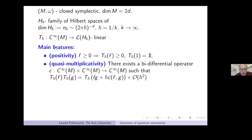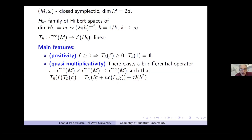We then have the rule of quasi-multiplicativity: roughly speaking, the quantization sends products to products. More precisely, there exists a bi-differential operator C such that T_{h-bar}(f)·T_{h-bar}(g) = T_{h-bar}(fg) + h-bar·T_{h-bar}(C(f,g)) + O(h-bar²). The existence of such an expansion is a serious restriction.